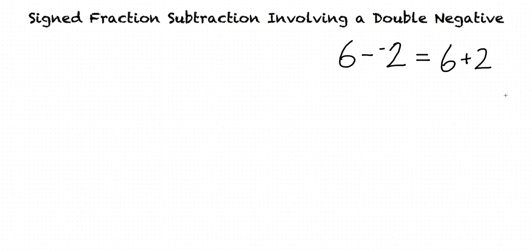Remembering this will be very useful when we apply it to fractions. Let's try an example of signed fraction subtraction involving a double negative. Suppose we're asked to evaluate negative 2 fifths minus negative 9 eighths. Since we're subtracting a negative number, can we change that to addition? We certainly can. And now that we've taken care of this minus and negative, we can focus on adding these two fractions.